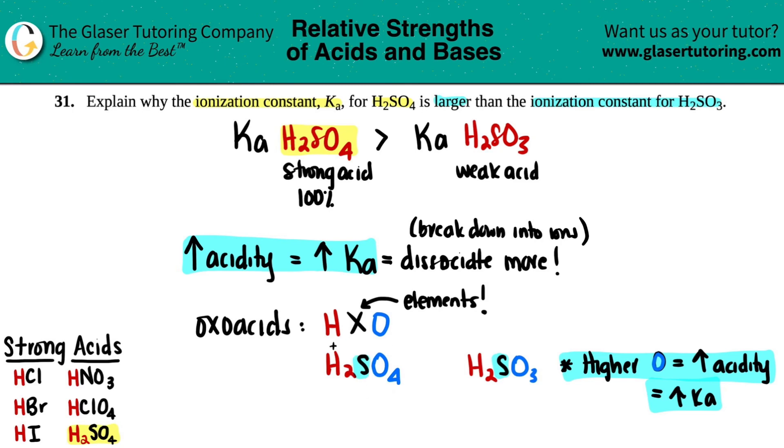Remember, hydrogens are plus one, oxygens are minus two, so that doesn't change here. Plus one and minus two. We want to try to find that sulfur charge. Now, we did this math in previous chapters, so this will kind of be like a refresher. You had two hydrogens times the plus one, and then you had four oxygens times by a negative two.